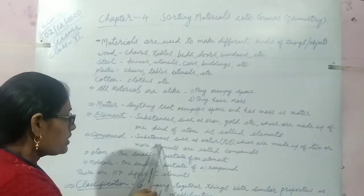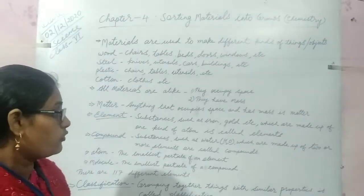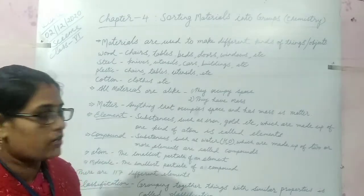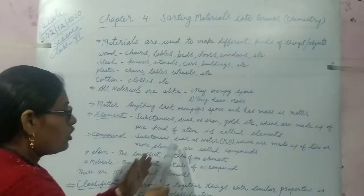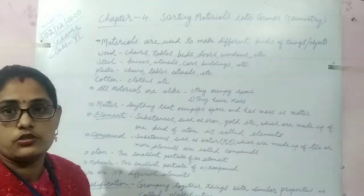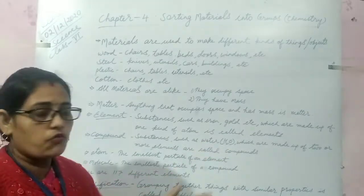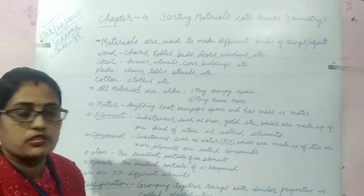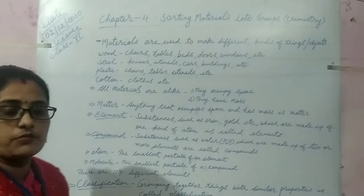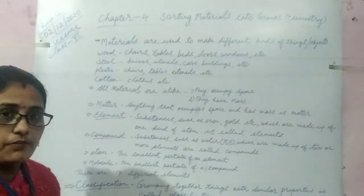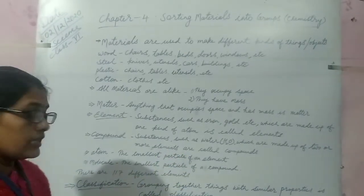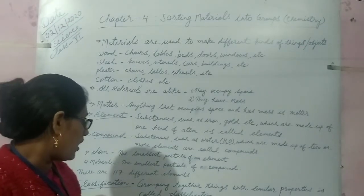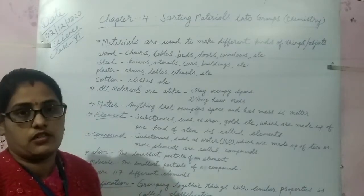Compound. Substances like water. The formula of water is H2O. Which are made up of two more elements are known as compounds. So compound is the combination of two or more than two elements. For example water. The formula of water is H2O. It is made up of two elements. Hydrogen and oxygen. Now atom. Atom is the smallest particle of an element. But molecule. It is the smallest particle of compound. There are total 117 different elements around us.